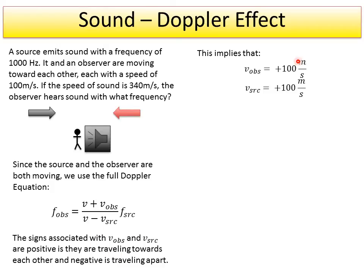It implies that the speed of the observer is a plus value when we substitute it in, and the speed of the source is a plus value when we move it in because they're both moving towards each other.